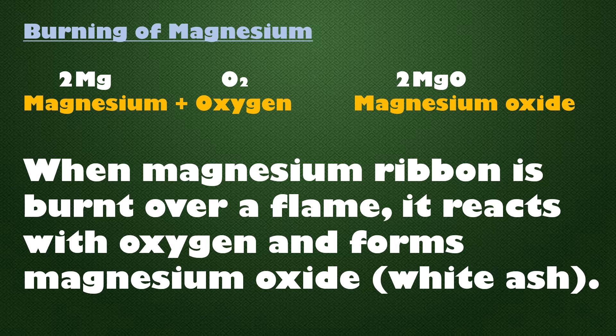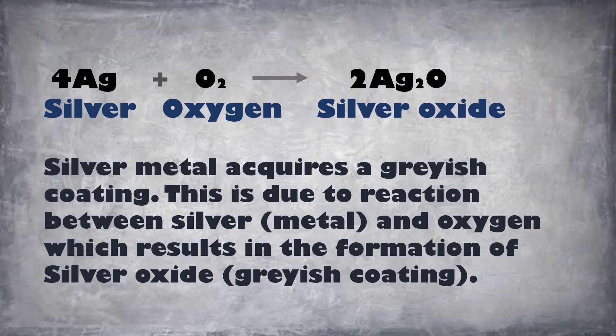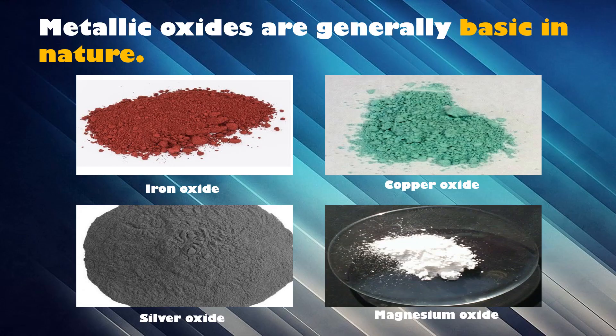Silver metal acquires a grayish coating. This is due to the reaction of silver and oxygen, which results in the formation of silver oxide. The chemical equation for the reaction has been shown above. All these metallic oxides are generally basic in nature.